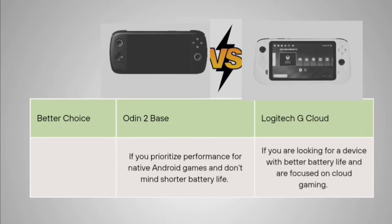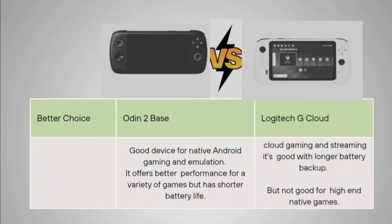The Logitech G Cloud is good for those into cloud gaming with quite good battery backup compared to other gaming handhelds. The Auden 2 Base is a good device for native Android gaming and emulation, offering better performance for a variety of games but with shorter battery life. The Logitech G Cloud is good for cloud gaming and streaming with longer battery backup, but not ideal for high-end native games.